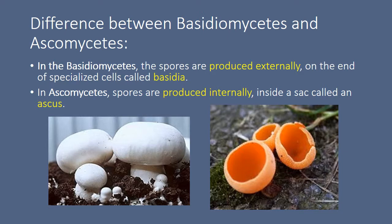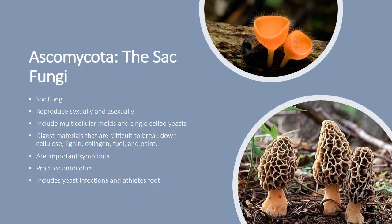Both basidiomycetes and ascomycetes are in the sub-kingdom Dikaryota, but a key difference is where spores are produced. In basidiomycetes, spores are produced externally on the ends of basidia; in ascomycetes, spores are produced internally in a sac called an ascus. Ascomycota are the sac fungi and can reproduce sexually or asexually. This group includes single-celled fungi — yeast is a prime example of a single-celled ascomycete.